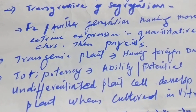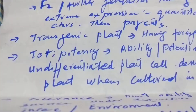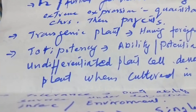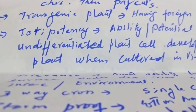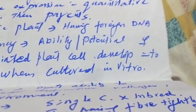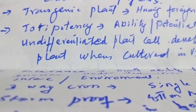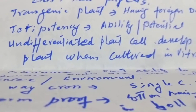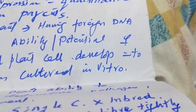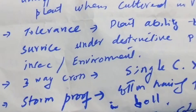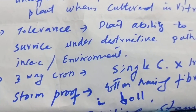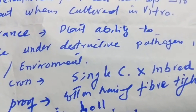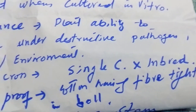Transgressive segregation also refers to when F2 and further generations have foreign DNA. Totipotency is the ability or potential of undifferentiated plant cells to develop into a plant when cultured in vitro. Tolerance is the ability to survive under a destructive pathogen, insect, or environment.